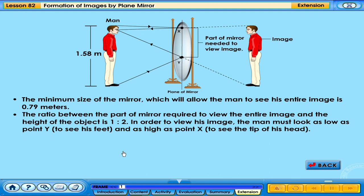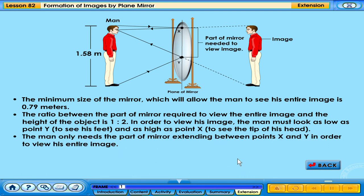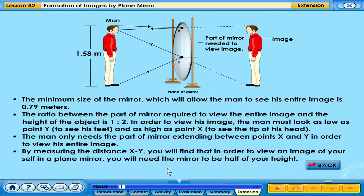In order to view his image, the man must look as low as point Y to see his feet and as high as point X to see the tip of his head. The man only needs the part of the mirror extending between points X and Y to view his entire image. By measuring the distance XY, you will find that to view an image of yourself in a plane mirror, you need the mirror to be half of your height.